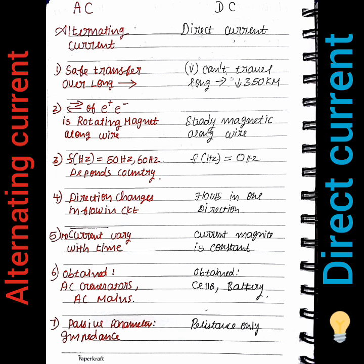In AC current, the direction of current flow in the circuit alternates — positive becomes negative and negative becomes positive, so the current flows either way. But in DC current, the flow is always in the same direction, from positive to negative.